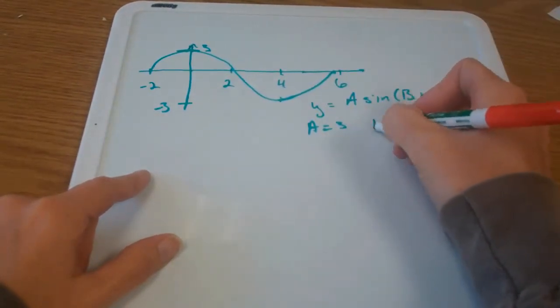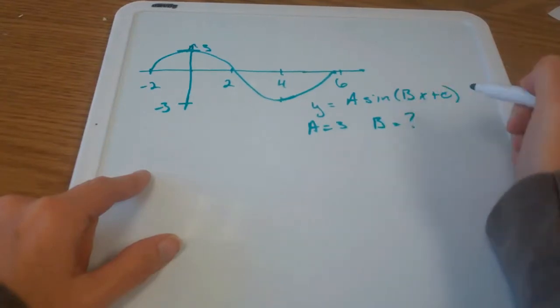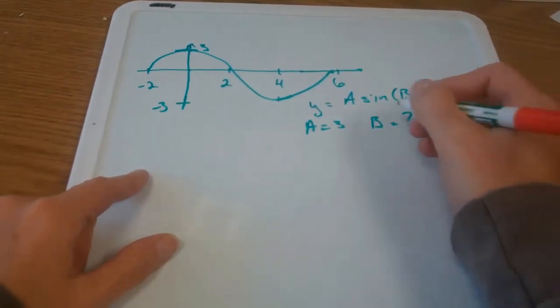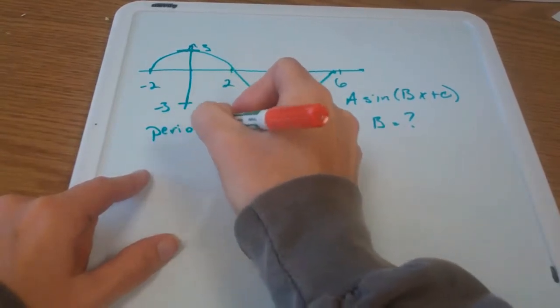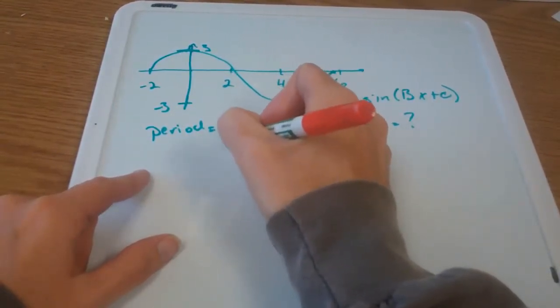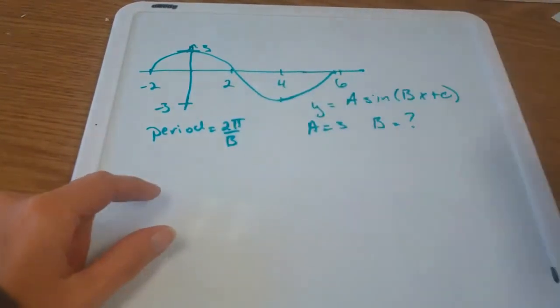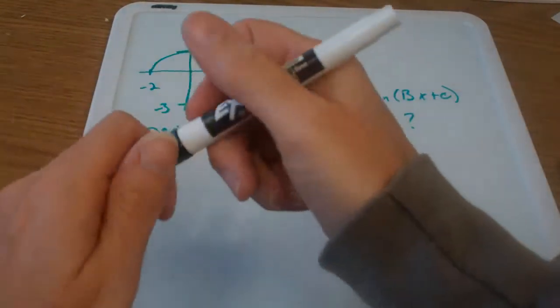Now b, that's my next one. I know that the period is equal to 2π over b. The period is the length of one cycle.